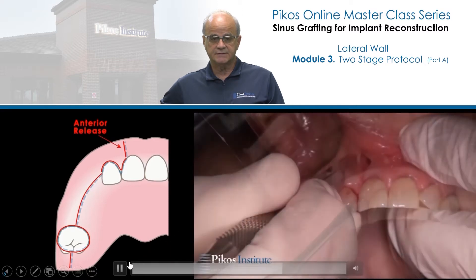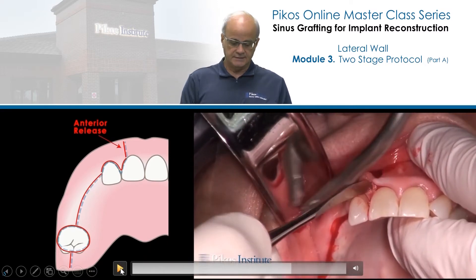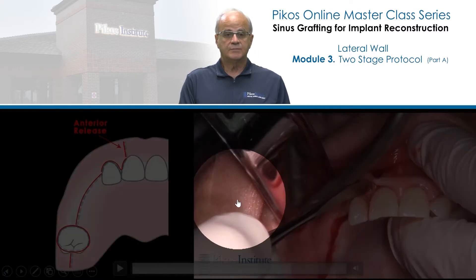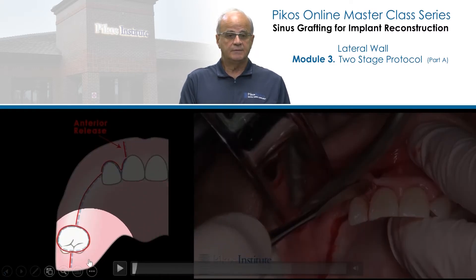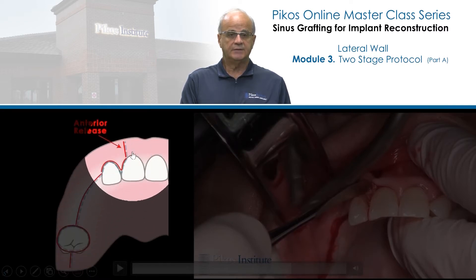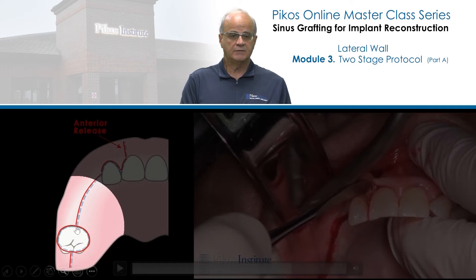This is the second surface release that is done anteriorly. So in summary: a distal release at the tuberosity, a distal surface release incision, and an anterior release right here. So anterior and posterior, and then sulcular-crestal, sulcular-crestal.